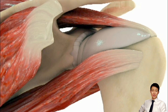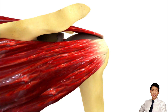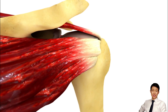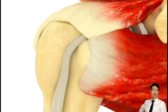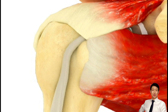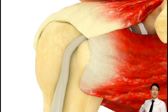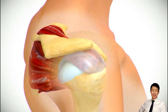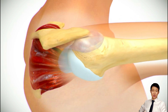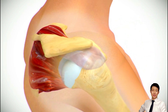The teres minor, a narrow muscle below the infraspinatus, inserts into the inferior facet and complements external rotation and posterior stability. Near their humeral insertions, the tendons of the supraspinatus and infraspinatus merge into a common structure. The integrity of this fusion is critical for coordinated movement and force transmission.